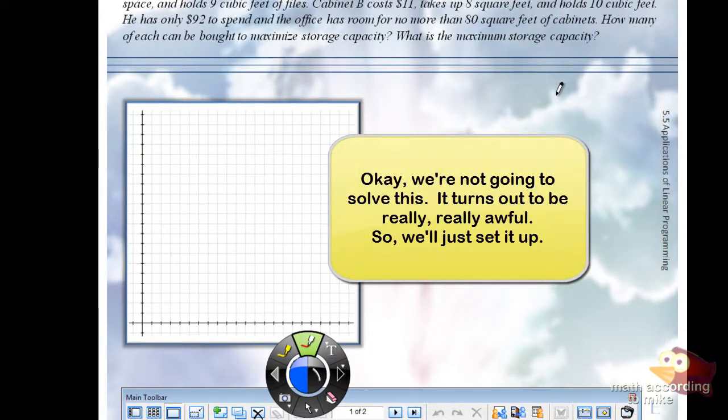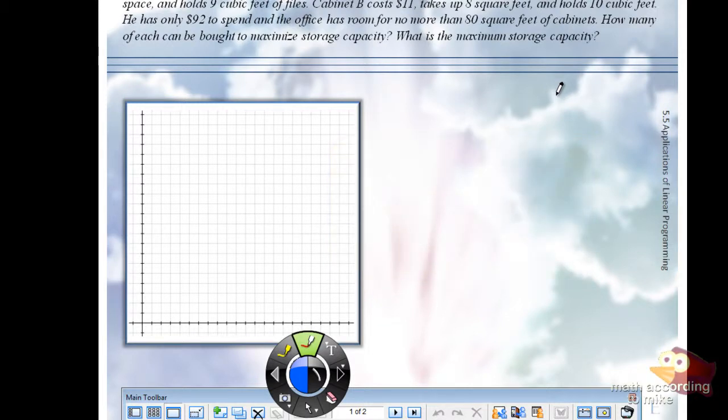So, as I said, we're going to solve it using the corner point method. Our first task is to turn the words into a linear program problem. Once we do that, then it becomes a 5-4 problem. Read over the problem in italics.